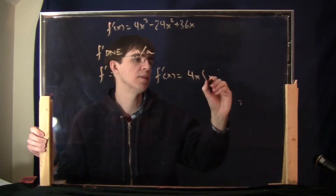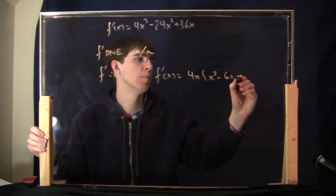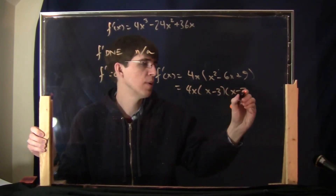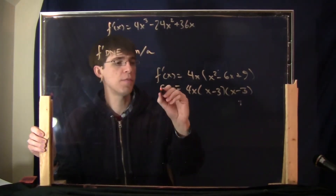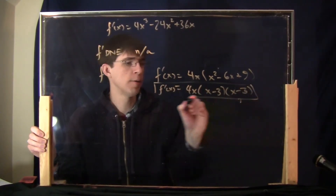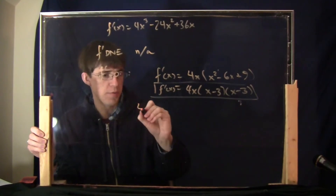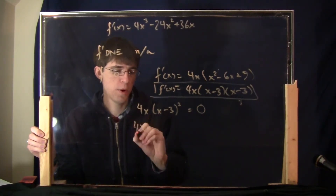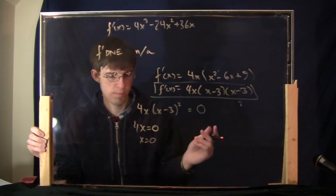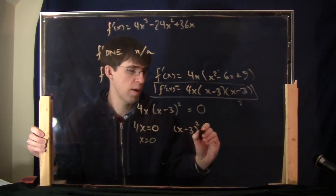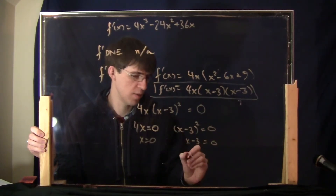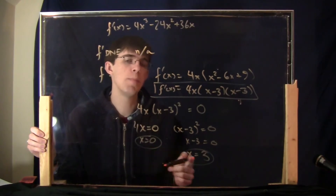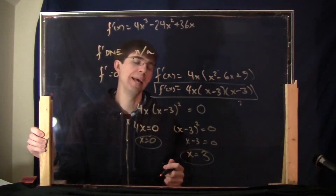Factoring out 4x, what remains is x squared minus 6x plus 9. That part factors as x minus 3 times x minus 3, so that's x minus 3 squared. Setting 4x times x minus 3 squared equal to 0 and solving for x: 4x equals 0 gives x equal 0, and x minus 3 squared equals 0 means x equals 3. So these are my two critical numbers. Now I said we want to find the critical numbers with the y values and then plot them on a graph.